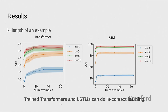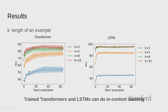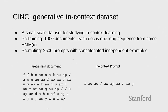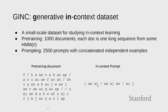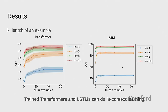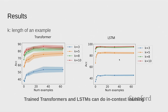The prompting distribution is concatenated independent examples — basically the same distribution with punctuating delimiters. We trained transformers and LSTMs on the pre-training distribution and then conditioned on this prompting distribution to see if it could predict the right answer. As the number of in-context examples increases, we see the transformer improves. The k here is the length of an example — so k equals 3, for instance. As the length of an example increases, things get better. This should be natural, because longer in-context examples look more in-distribution. Interestingly, LSTMs are actually doing a little bit better than transformers here.